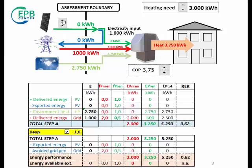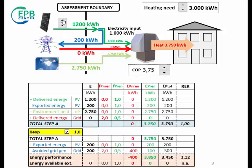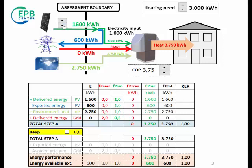But if we raise the PV production, at some time it will exceed the electricity input of the heat pump and exported energy will appear. In the video about exported energy, we explained that there are two alternatives to evaluate exported energy. Here we will focus on the option k-exported equals zero. With this option, as soon as the PV production exceeds the electricity input, the energy performance will stay constant because the excess delivered energy is compensated by the exported energy.